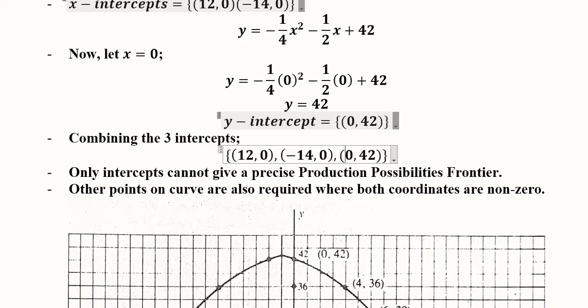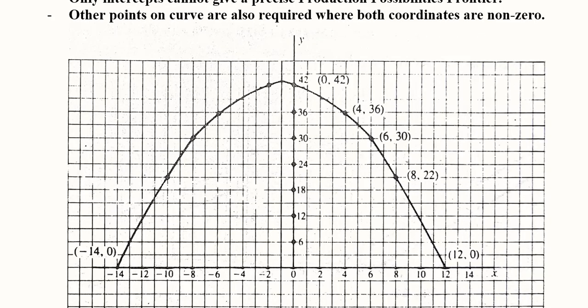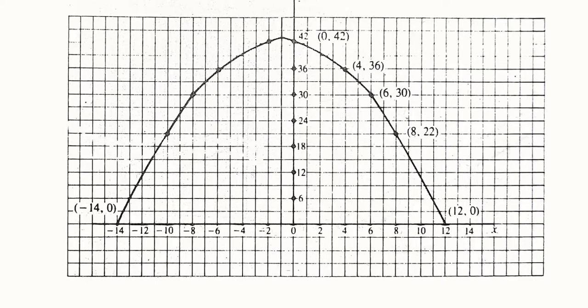Now I have three intercepts: two x-intercepts and one y-intercept. Combining these, I can get the production possibilities frontier, and this is the diagram. This is the x-intercept in the negative dimension, this is in the positive dimension, and this is the y-intercept. But if I use only these three points, I would have straight lines joining these two points.